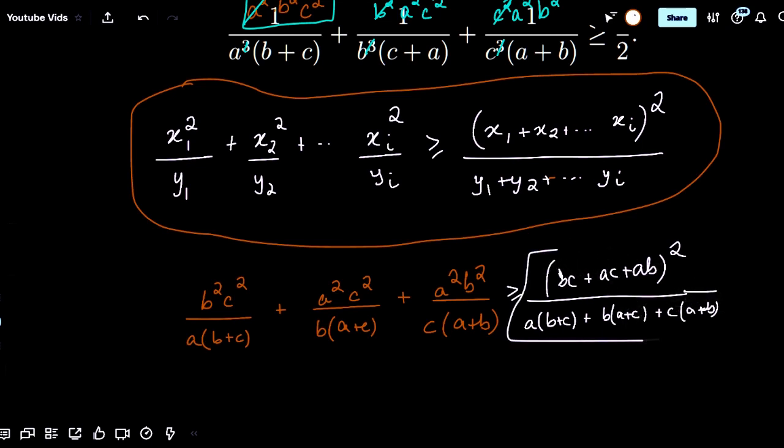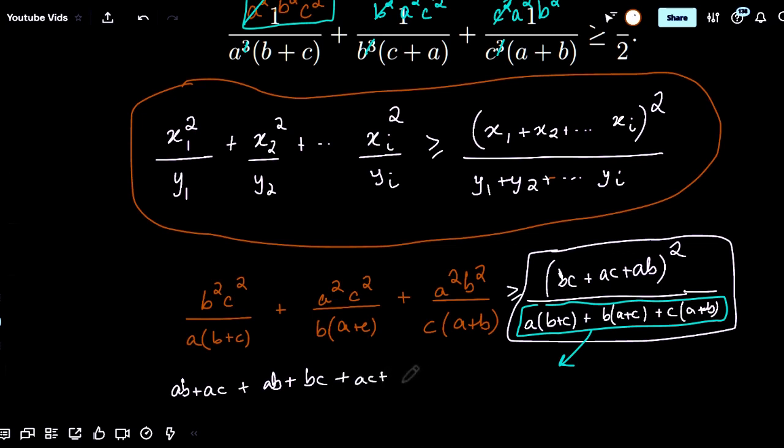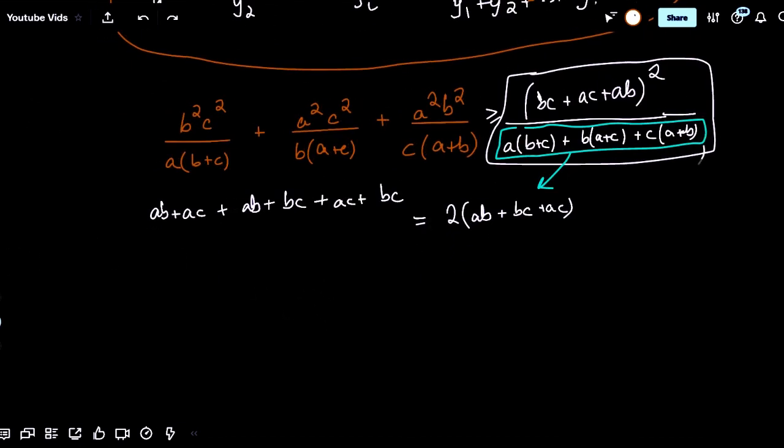Now I should simply try to prove that this part of the inequality, this right hand side, if this is greater than or equal to 3 over 2 we're done. But one thing to know is to perhaps try to simplify this. If you're familiar with algebra, this actually has a nice form. If we do write it out, it's ab plus ac plus ab plus bc plus ac plus bc. We see that every term repeats twice, so that would be equal to 2 times ab plus bc plus ac. And whoa, would you look at that, that's exactly what we have here. So we can simplify this right hand side to be ab plus ac plus bc over 2.